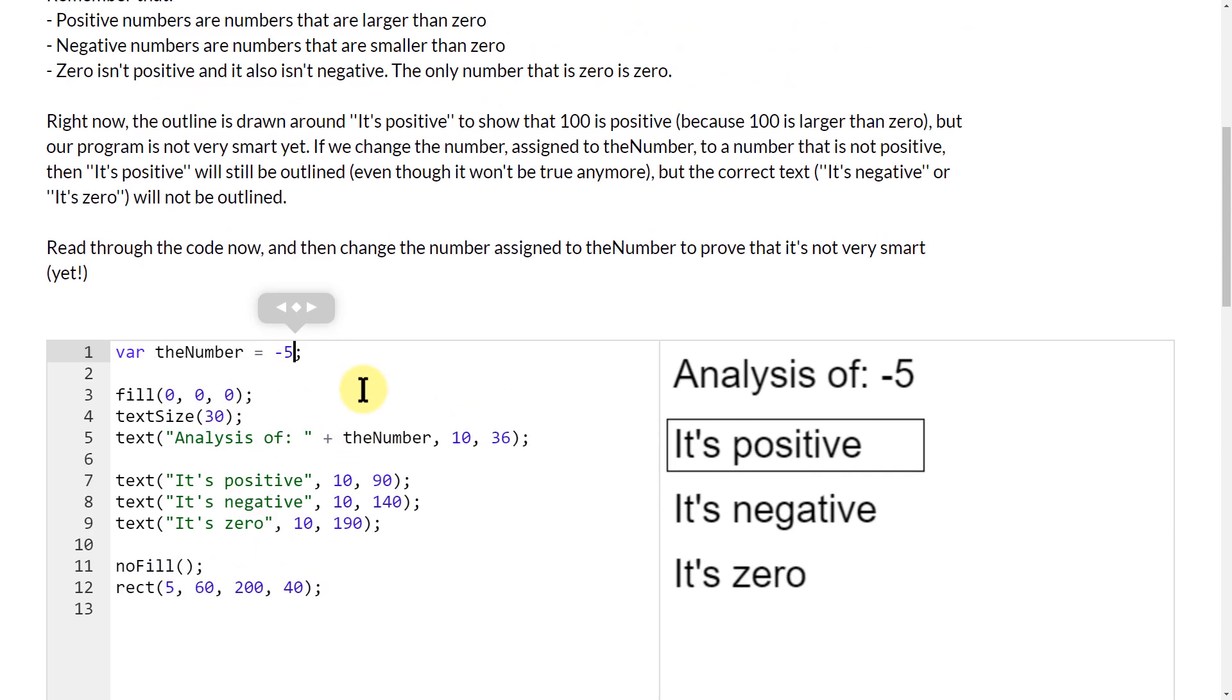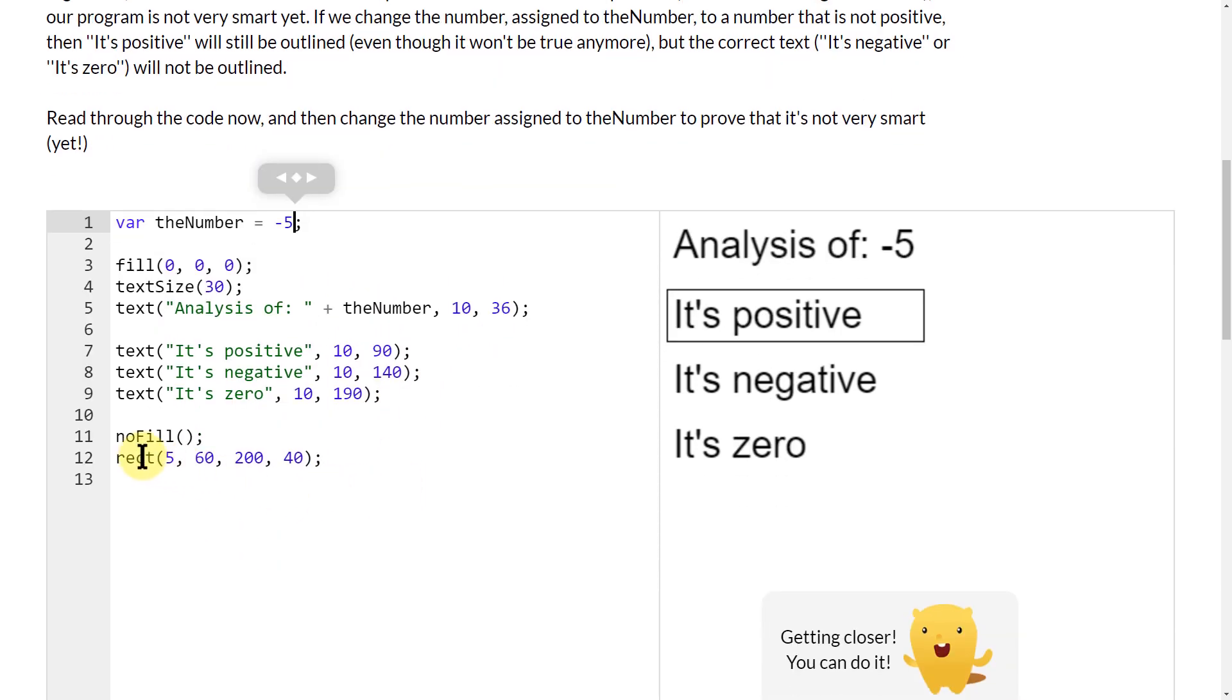The first step is copying the rectangle three times. I'm just going to hit Control-C and paste and paste. So now I have three rectangles there, but they're all in the same spot.